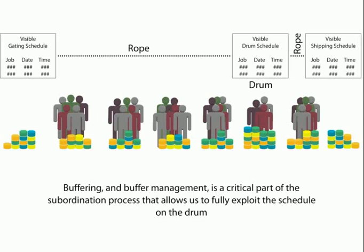Buffering and buffer management is a critical part of the subordination process that allows us to fully exploit the schedule on the drum. Though we have a schedule available, there is uncertainty everywhere that can strike. So we have to develop a safety mechanism which can absorb this uncertainty and make sure that the drum is never starved of something to work on. As we know, an hour lost at the drum is an hour lost for the whole system. So if the drum has to be protected, we need a method of protecting or buffering — and using this method is called buffer management.